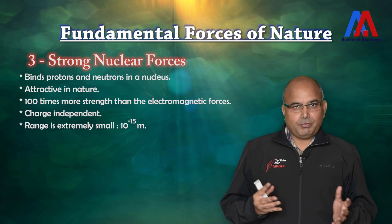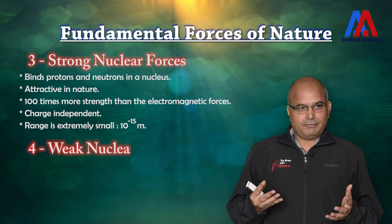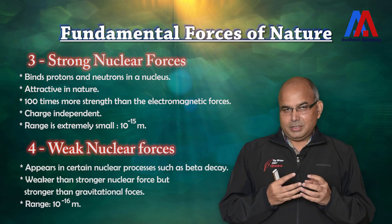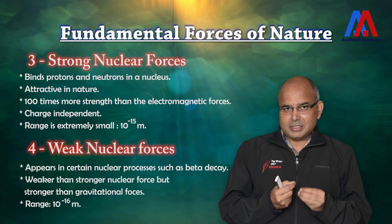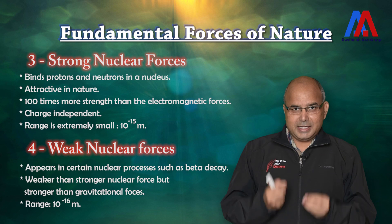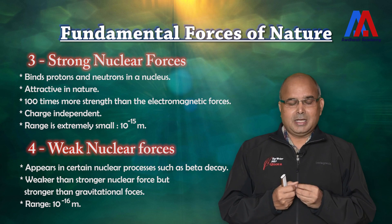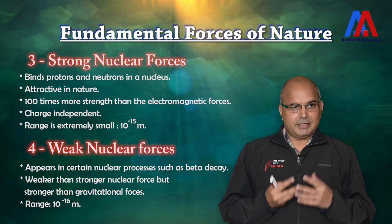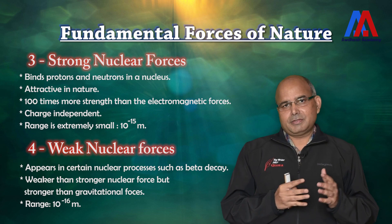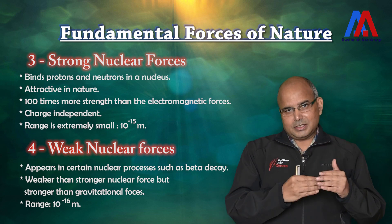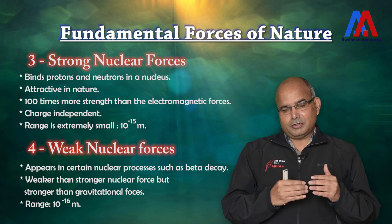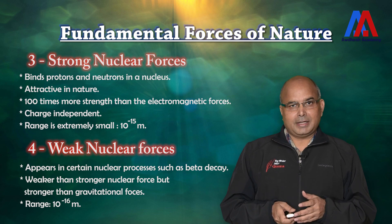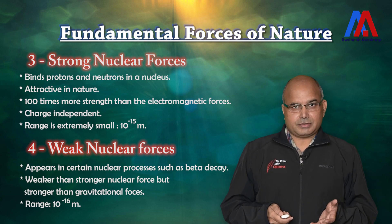The fourth important force is weak nuclear force, which also appears only at the nuclear range — an even smaller range of 10⁻¹⁶ meters. This force is responsible for events like beta decay. It is lesser than the strong nuclear force but much stronger than the electromagnetic or gravitational force.